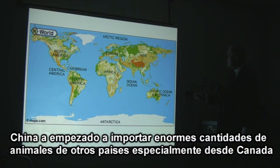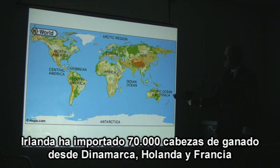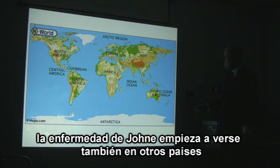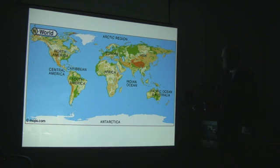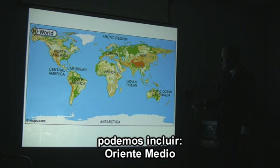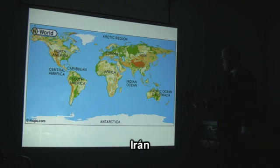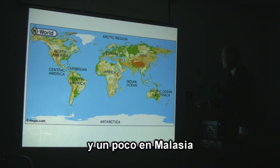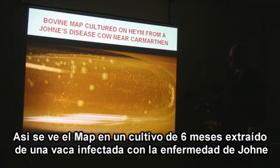China has imported huge numbers of cattle from other countries, especially Canada. Ireland imported 70,000 cattle from Denmark, Holland and France. And so Johne's disease is beginning to appear in other countries, which now includes the Middle East, Iran, India and Japan, Korea, and a little bit in Malaysia.